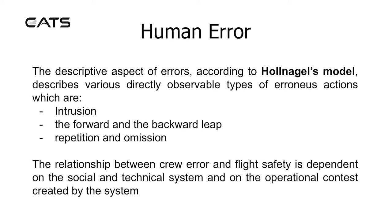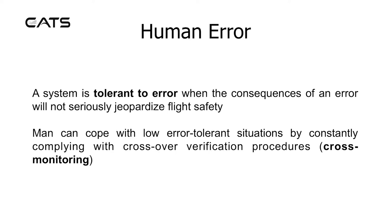These observable erroneous action types include intrusion, the forward and backward leap, repetition, and omission. The relationship between crew error and flight safety is dependent on the social and technical system and on the operational context created by the system. A system is tolerant to error when the consequences of an error will not seriously jeopardise flight safety.